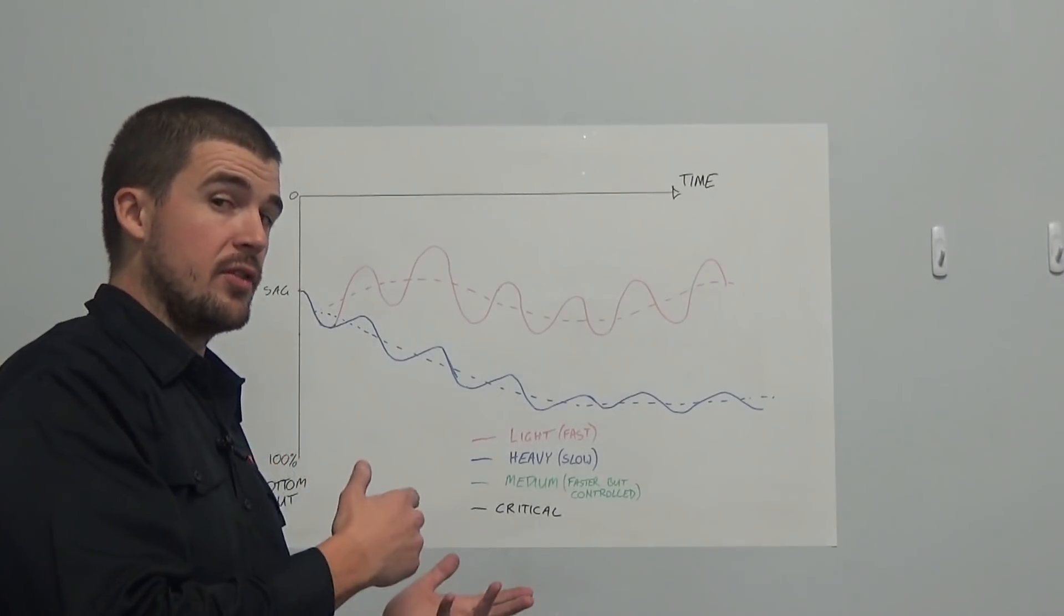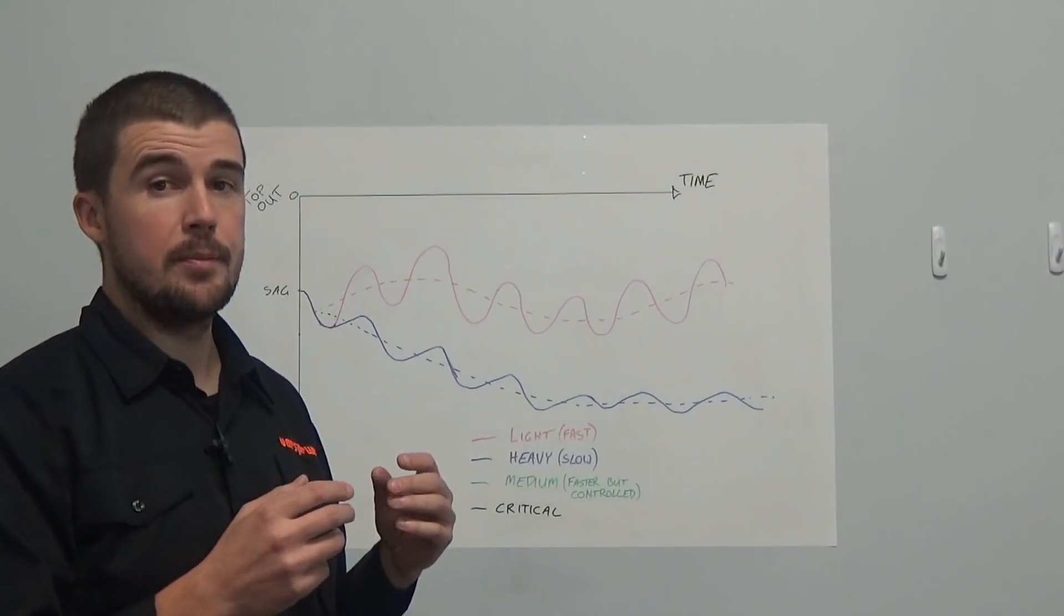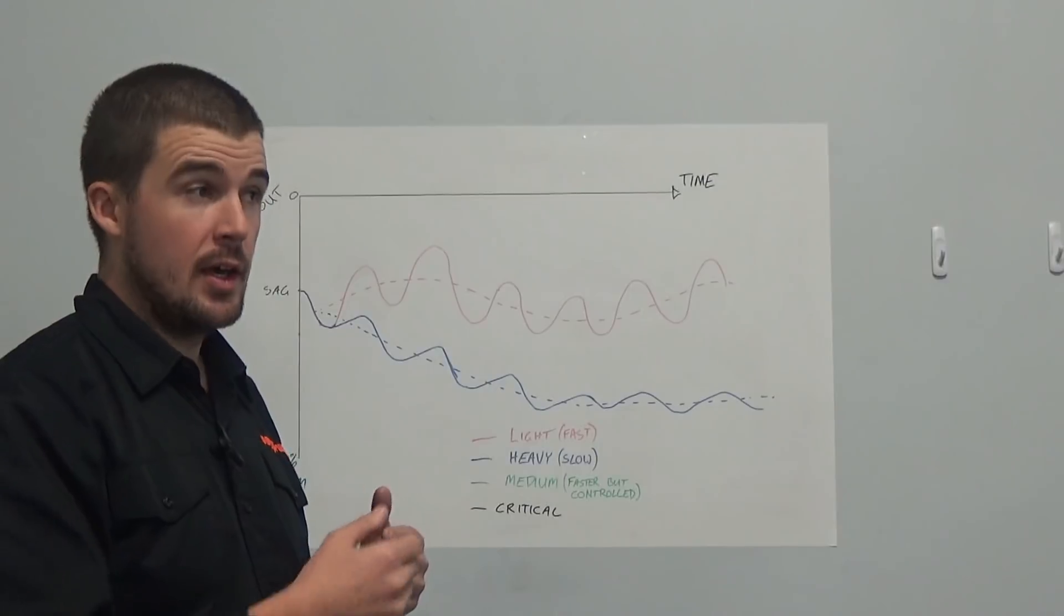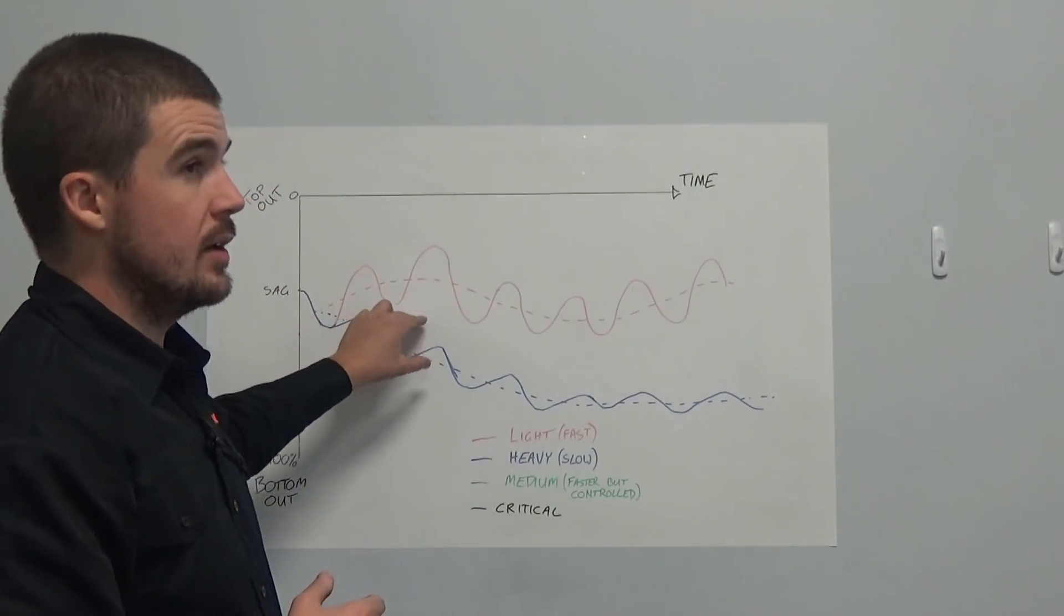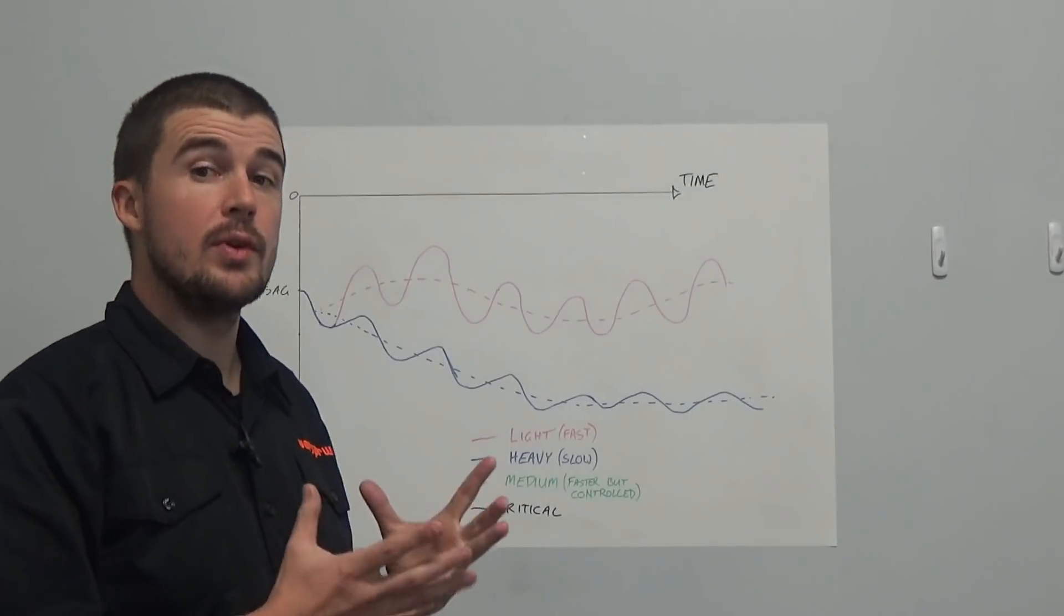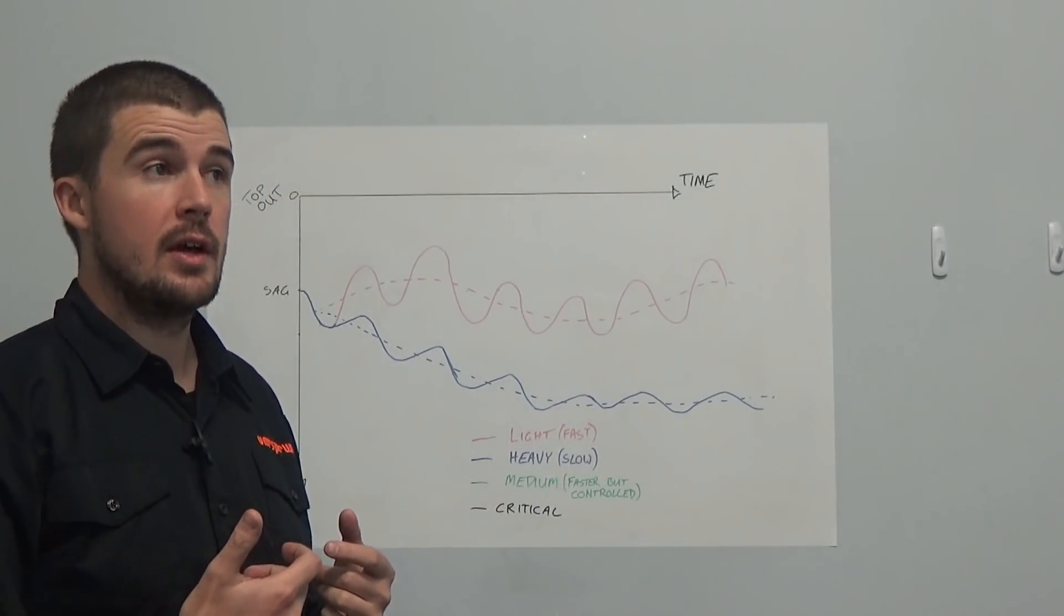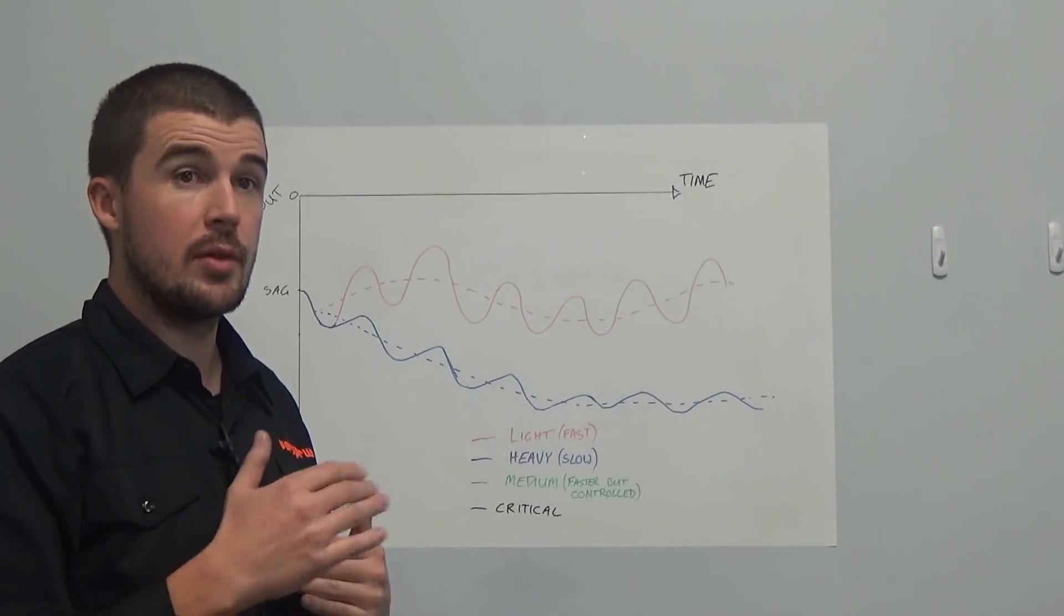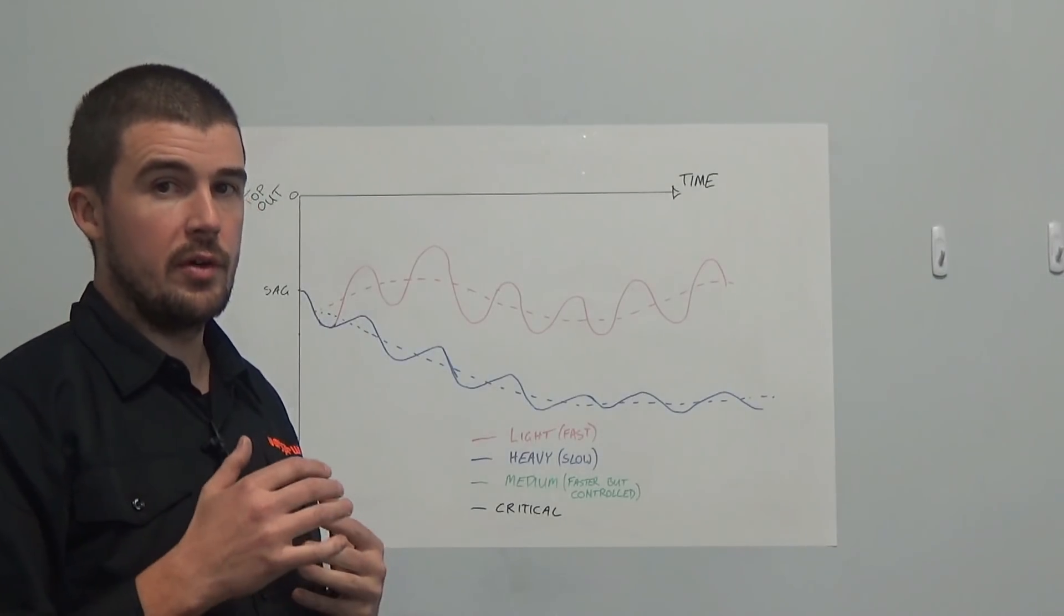Likewise, the opposite extreme, if we slow it down purely for the sake of stability, then we start to compromise the bike's ability to track. However, optimum traction, even though it would seem sort of intuitive initially that it comes with fast rebound doesn't come with completely uncontrolled rebound or very fast rebound. There is always a sweet spot for that.